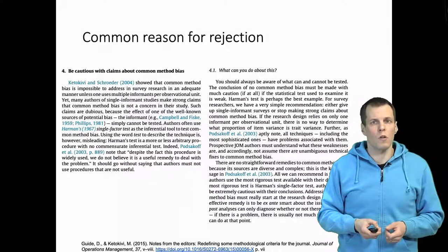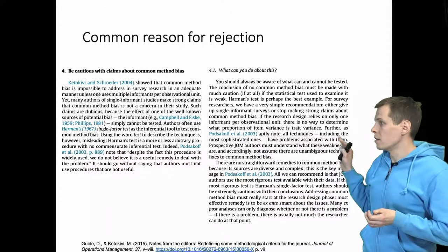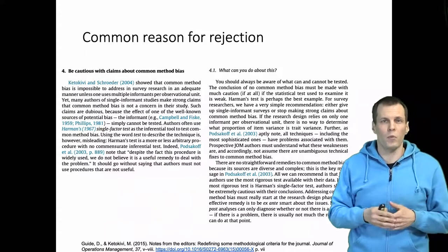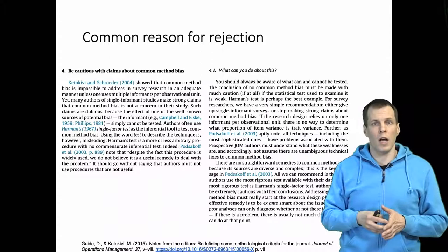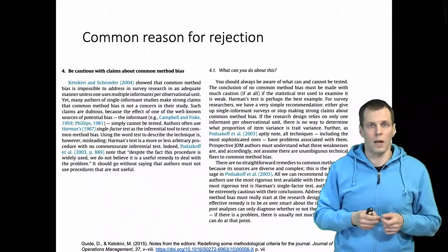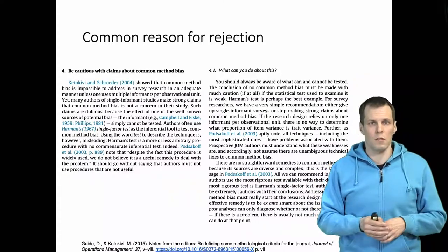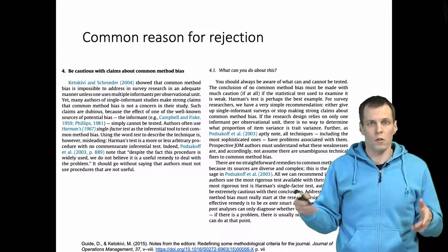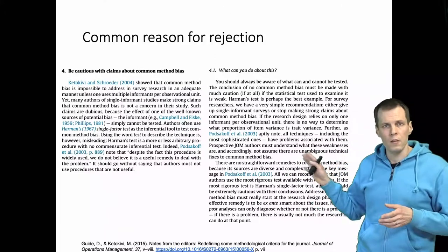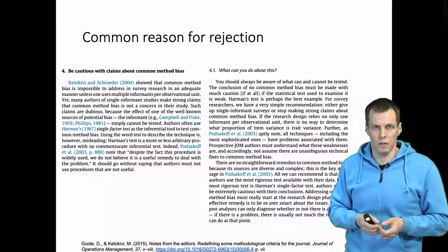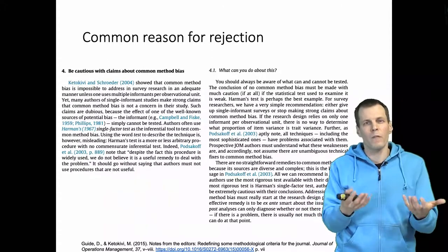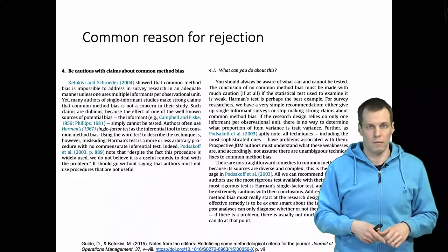Method variance issues are also a common reason for rejection. Method variance problems correlate with other problems — weak designs typically lack a time delay between cause and effect, so if you do a cross-sectional study the delay does not occur and it is difficult to establish the direction of causality. These tend to be among the reasons for rejection. This journal does not categorically reject studies with a method variance problem, but it is one of the main reasons among others that leads to rejection.